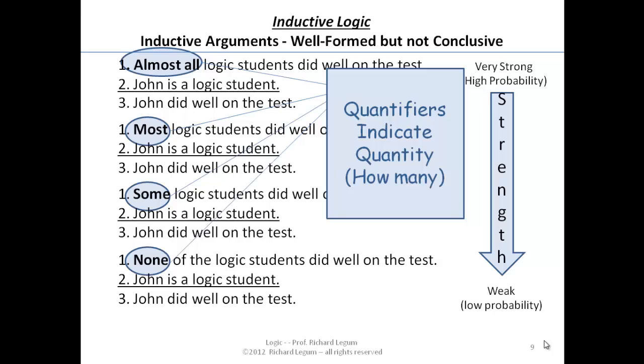Here we have almost all, most, some. So they're quantifiers indicating how many. And the more there are, the greater the quantity there are, the more likely it is that the conclusion follows from those premises.